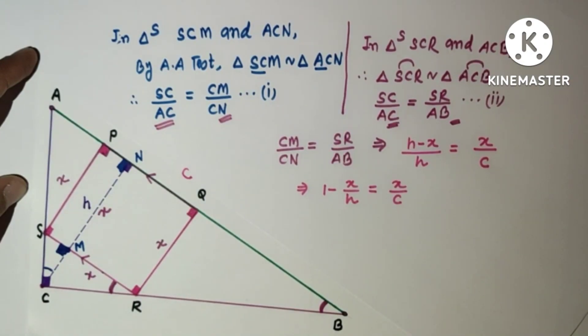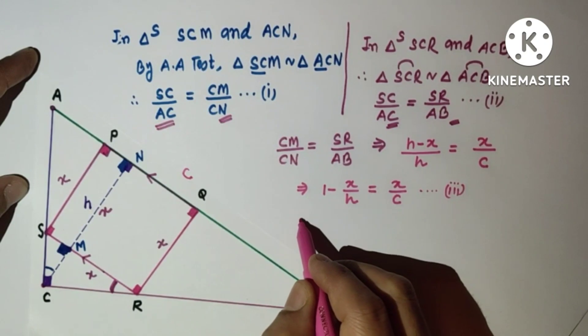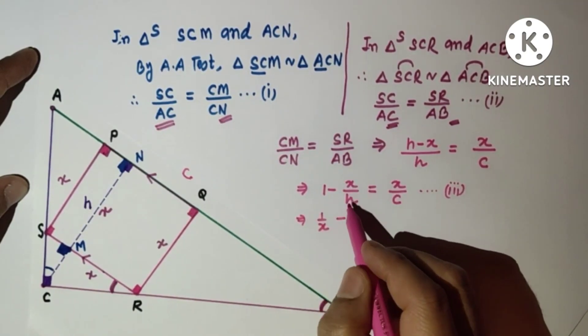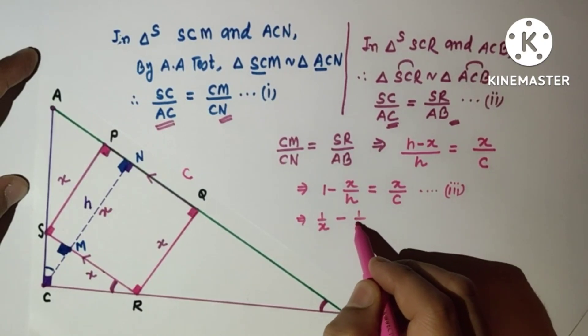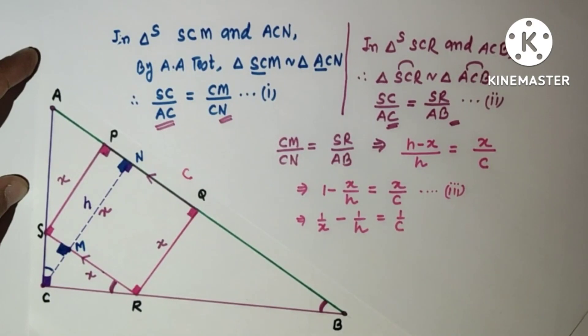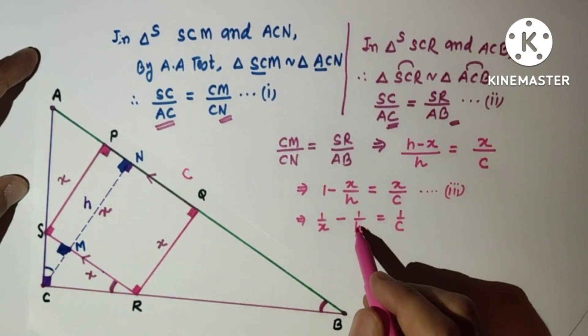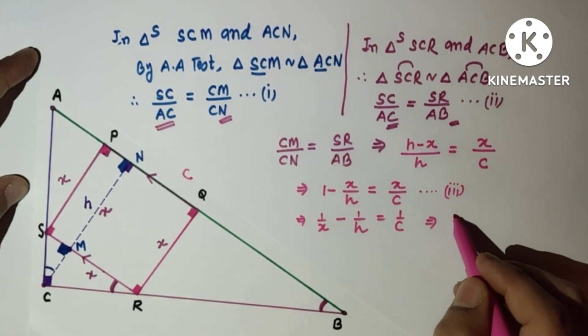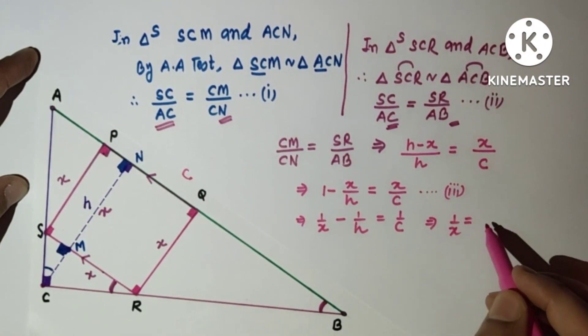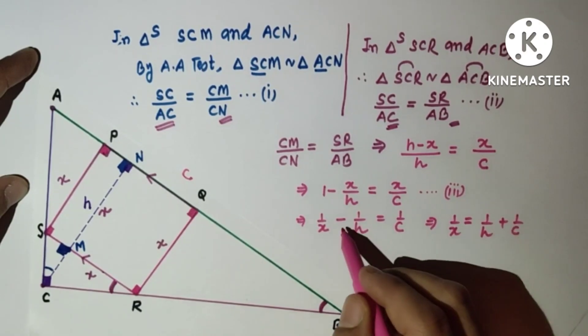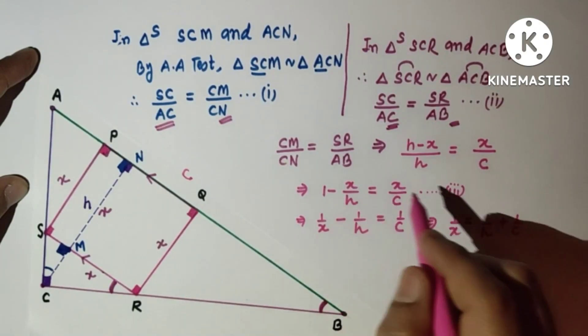Dividing throughout by x: 1/x - x/(h·x) = 1/c. This gives 1/x - 1/h = 1/c. Taking -1/h to the right side, we get 1/x = 1/h + 1/c.